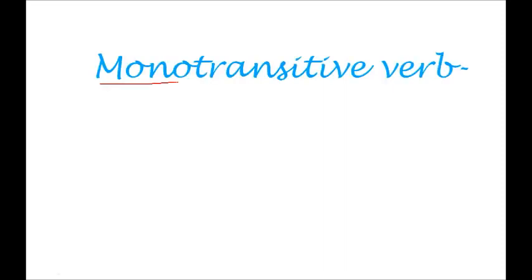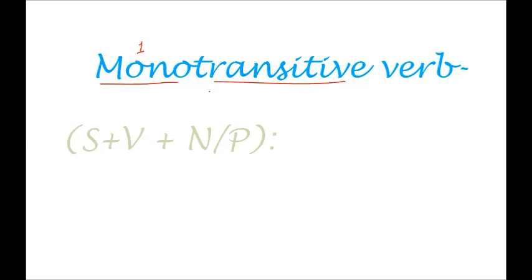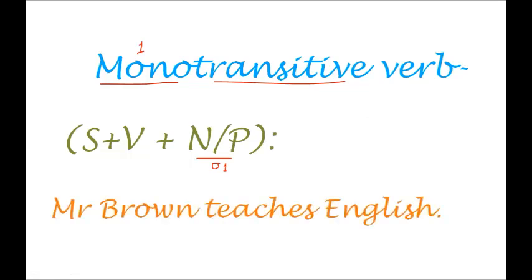Now we discuss transitive verbs, which we call monotransitive verbs. 'Mono' means one, so it's a single transitive. The structure is: subject, verb, and a noun or pronoun representing the object. In a monotransitive verb we get only one object. For example: 'Mr. Brown teaches English.' Here 'teaches' is the verb, 'Mr. Brown' is the subject, and 'English' is the object.